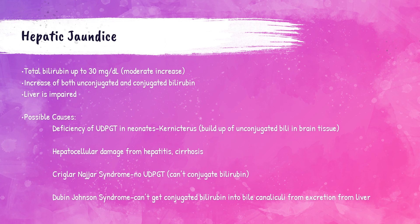Hepatic jaundice is the only form of jaundice in which the liver is impaired. Patients have a moderate increase in total bilirubin, up to 30 milligrams per deciliter, and both unconjugated and conjugated bilirubin are increased. Causes include kernicterus — where neonates have a deficiency of UDPGT causing a buildup of unconjugated bilirubin in brain tissue — Krigler-Najjar syndrome, where bilirubin cannot be conjugated due to the absence of UDPGT, Dubin-Johnson syndrome, which prevents conjugated bilirubin from being excreted, and liver damage from hepatitis or cirrhosis.